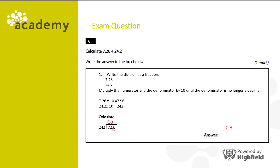But does 242 divide exactly into 726 three times? To find that out, we need to do a bit of multiplication: 242 times 3. Well, 3 times 2 is 6, 3 times 4 is 12, carry the 1, and 3 times 2 is also 6, adding the 1 is 7. So 242 exactly divides into 726 three times. Let's put the decimal point back in and it's 0.3.